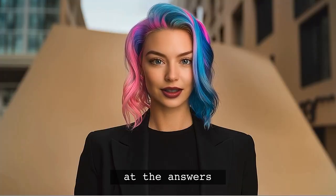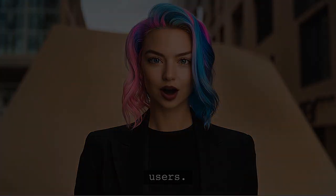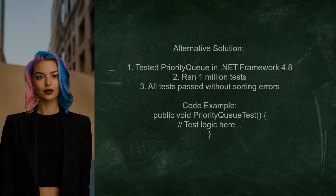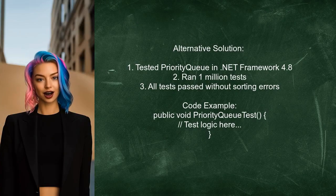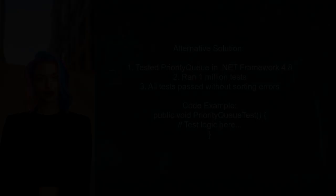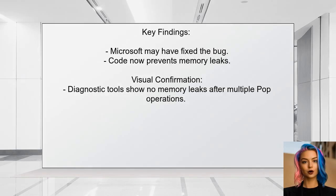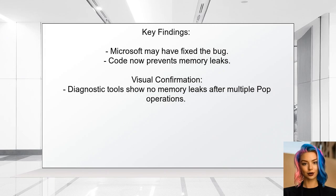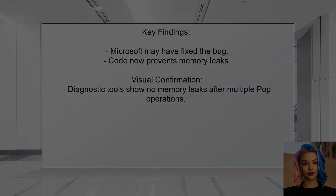Now let's look at the answers provided by other users. Another user tested the Priority Queue in .NET Framework 4.8 and found no sorting errors. They ran a million tests, ensuring that each element was less than or equal to the next, and all tests passed successfully. The user noted that Microsoft likely fixed the bug in their implementation, highlighting a specific code change that prevents memory leaks, confirming this with Visual Studio diagnostic tools.